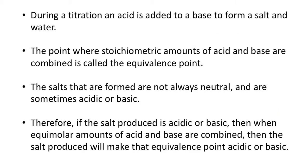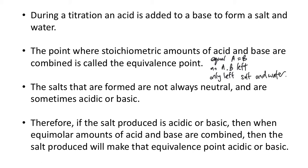During titration, an acid is added to a base or vice versa to form a salt and water. The point where stoichiometric amounts of acid and base are combined is called the equivalence point. When you add equal acid and base, they neutralize each other, so there's no acid and base left — the only thing that is left is salt and water. At the equivalence point, you have salt and water only when you have stoichiometric amounts of acid and base.